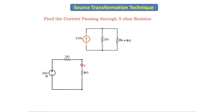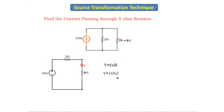I am replacing this part with its practical voltage source equivalent. The 2 ohm resistor remains the same. To find the voltage, using Ohm's law: V = I × R, where I = 10 and R = 2, so V = 20 volts.